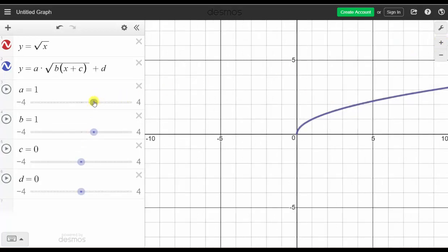So now we can change the value of a and see how it affects the graph. Set it back to one. Change the value of b, see how it affects the graph. Set it back to one. Change the value of c, see how it affects the graph. Set it back to zero. And change the value of d, and see how it affects the graph.